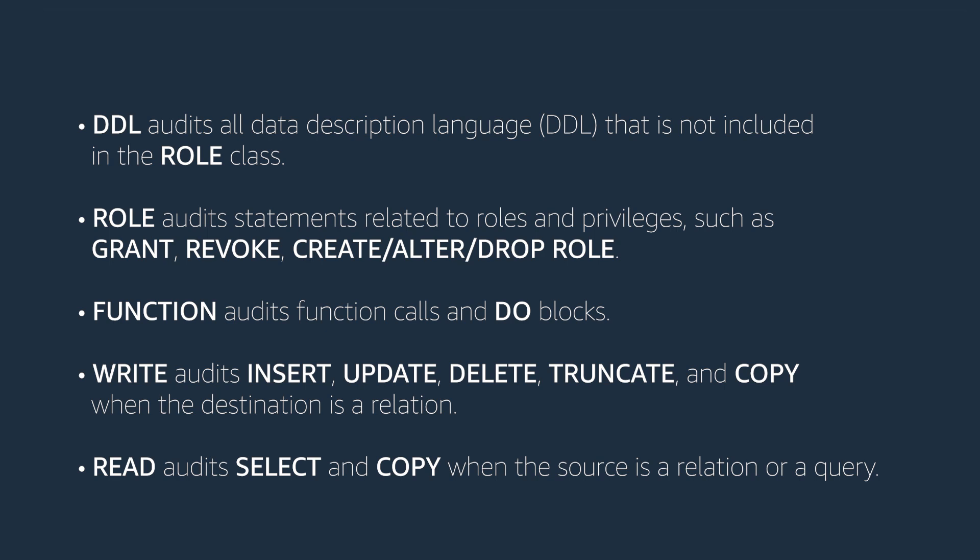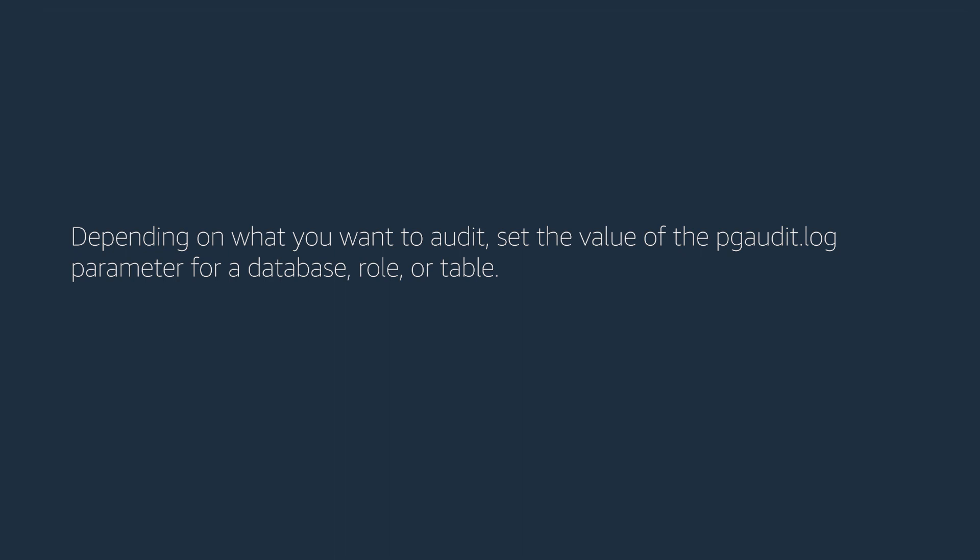'Write' audits insert, update, delete, truncate, and copy when the destination is a relation. 'Read' audits select and copy when the source is a relation or a query. Depending on what you want to audit, set the value of the pgaudit.log parameter for a database, role, or table.